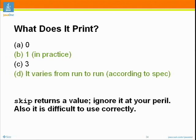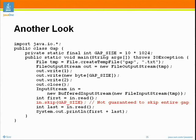The skip method is declared such that it can decide to return any value between zero and the number of bytes you requested. It turns out that a BufferedInputStream, if there's already some data buffered, will only skip the amount that's buffered and won't go down to the underlying stream to skip additional bytes. As a result, this will always perform a short skip.